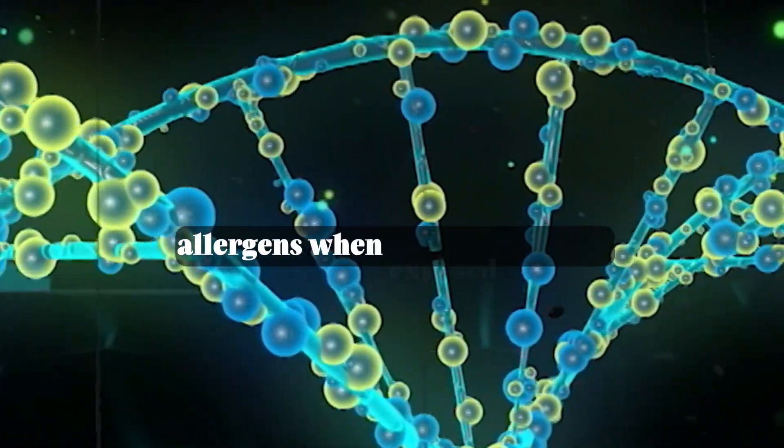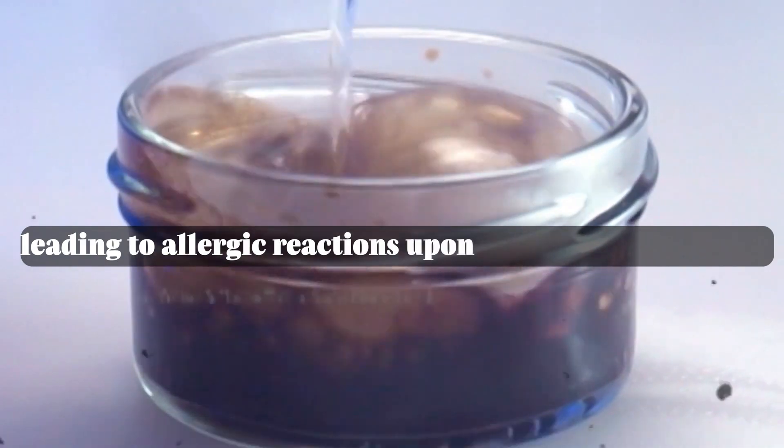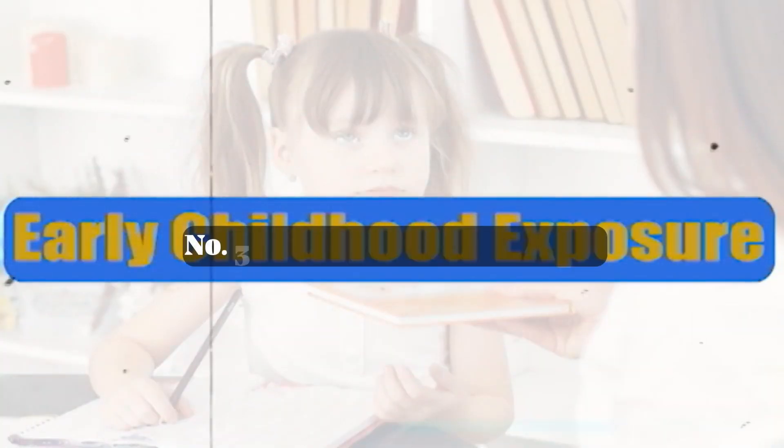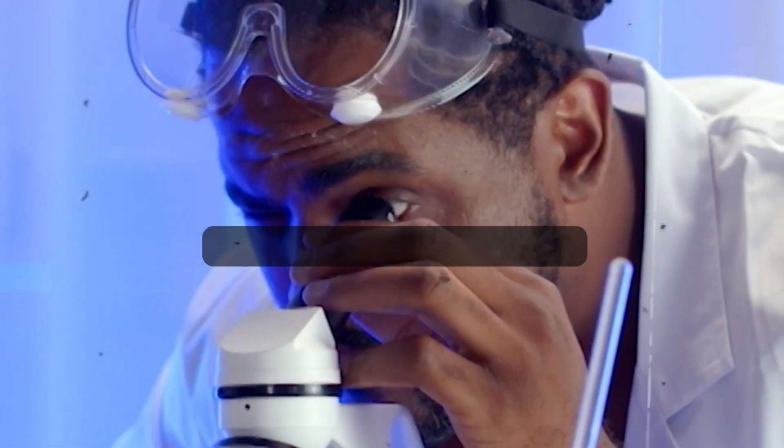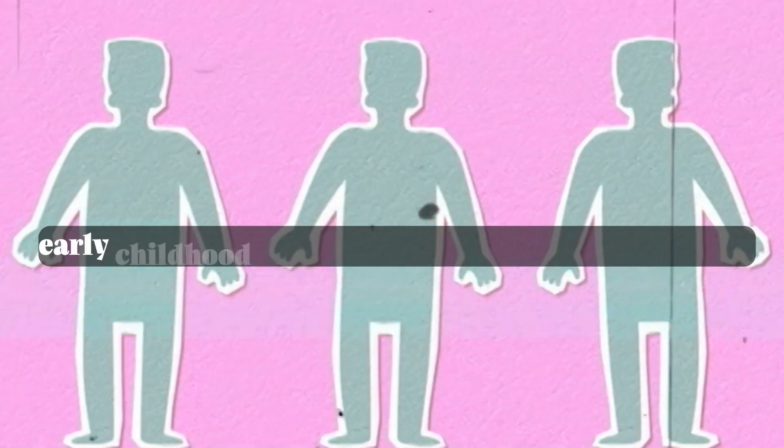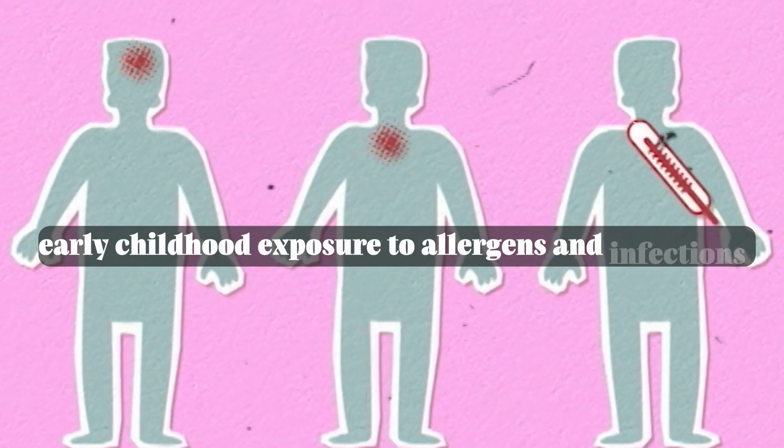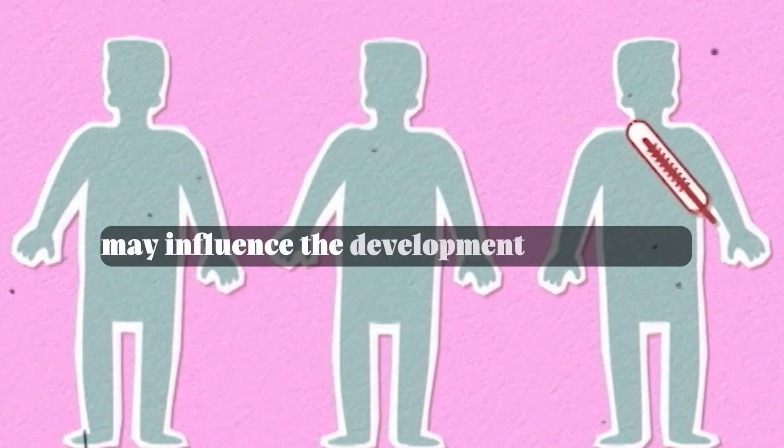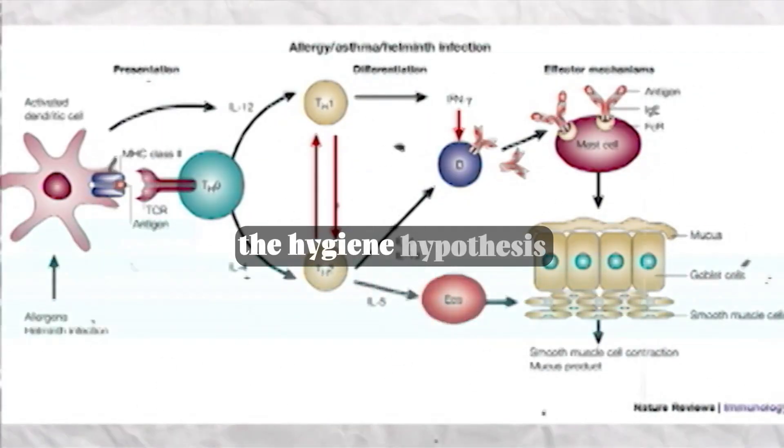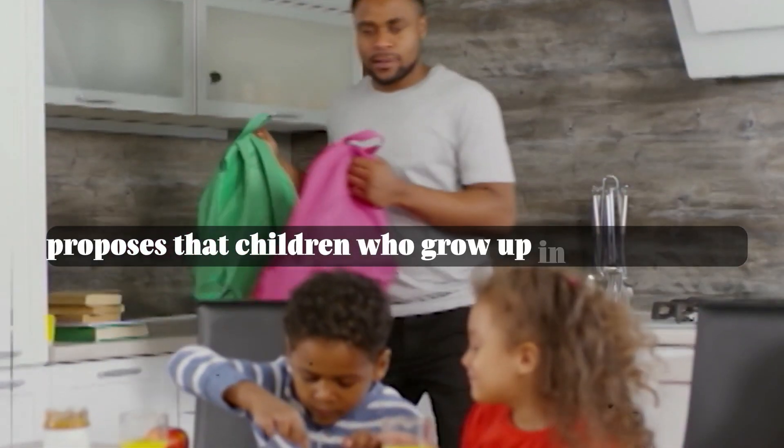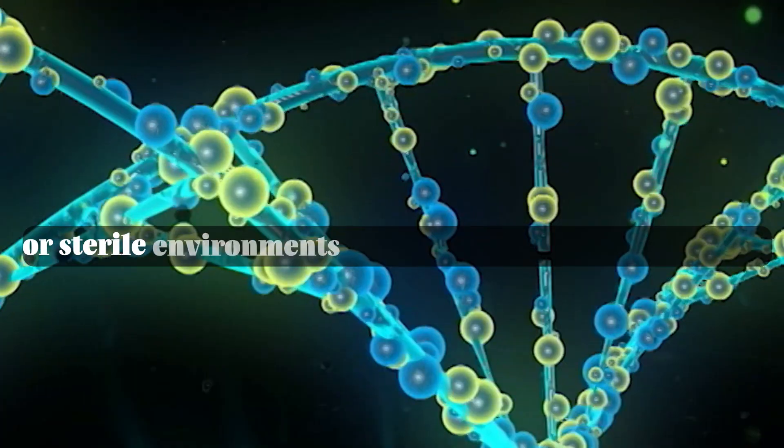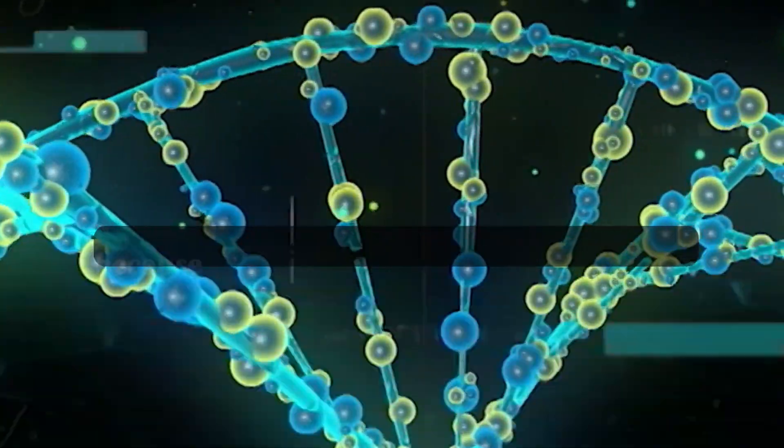Number three: early childhood exposure. Some research suggests that early childhood exposure to allergens and infections may influence the development of allergies. The hygiene hypothesis proposes that children who grow up in overly clean or sterile environments may be more prone to allergies because their immune systems don't develop proper tolerance to harmless substances.